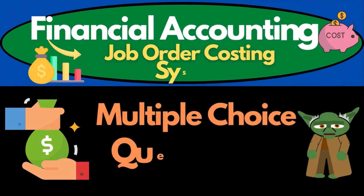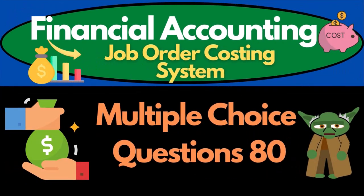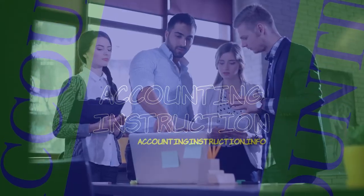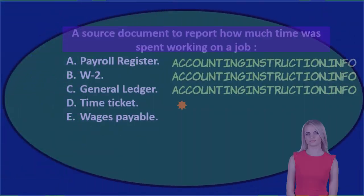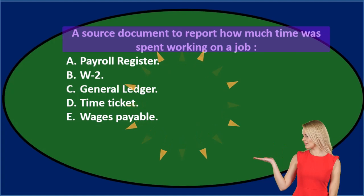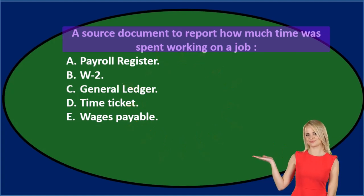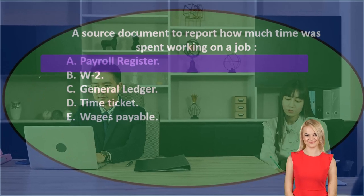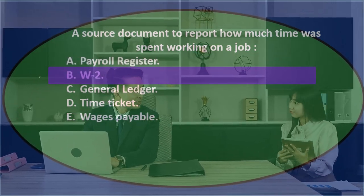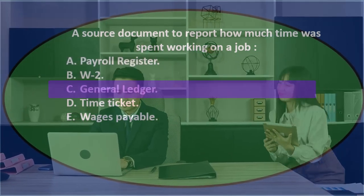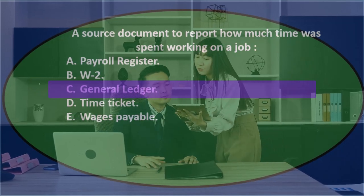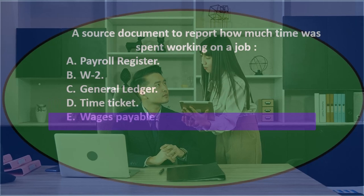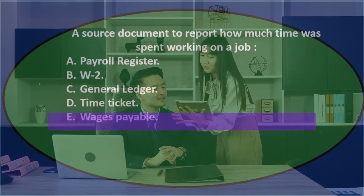In this presentation we will take a look at multiple choice questions related to a job cost system. First question: a source document to report how much time was spent working on a job. Options: A) payroll register, B) W-2, C) general ledger, D) time ticket, or E) wages payable.